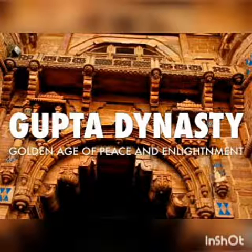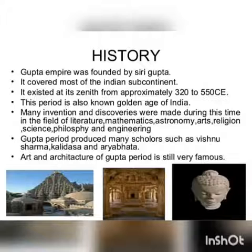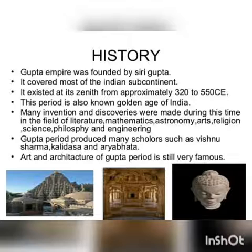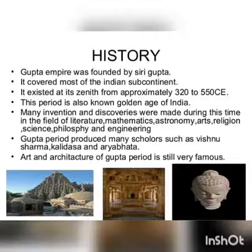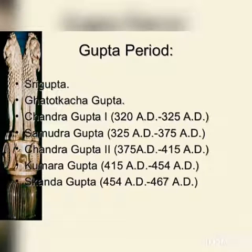The Gupta Empire was founded by Shri Gupta. It covered most of the Indian subcontinent and existed at its zenith from approximately 320 to 550 AD. This period is also known as the Golden Age of India. Many inventions and discoveries were made during this time in the fields of literature, mathematics, astronomy, arts, religion, science, philosophy, and engineering. The Gupta period produced many scholars such as Vishnu Sharma, Kalidasa, and Aryabhatta. The art and architecture of the Gupta period is still very famous.